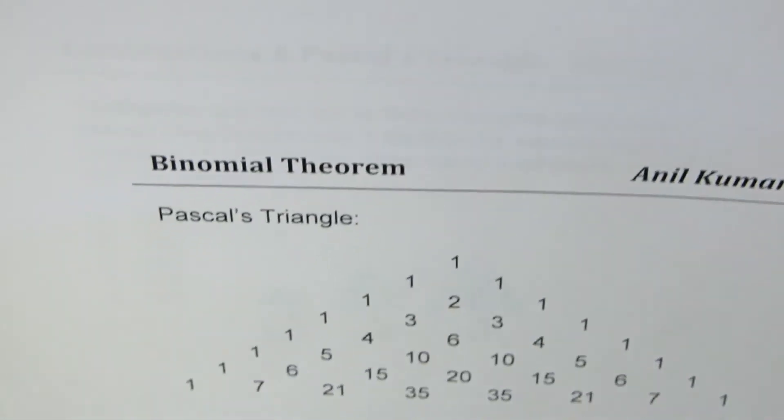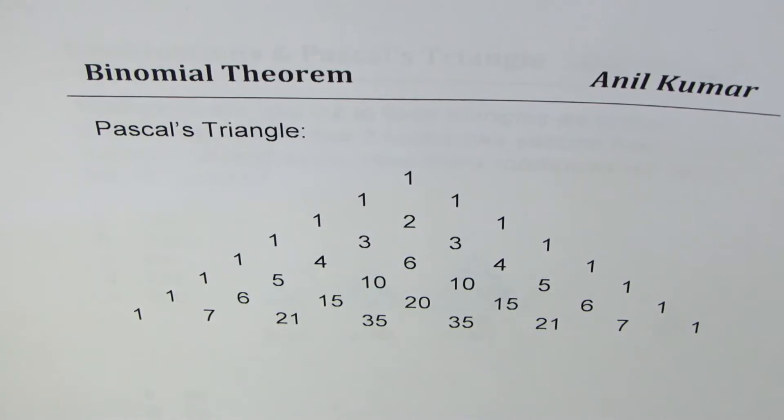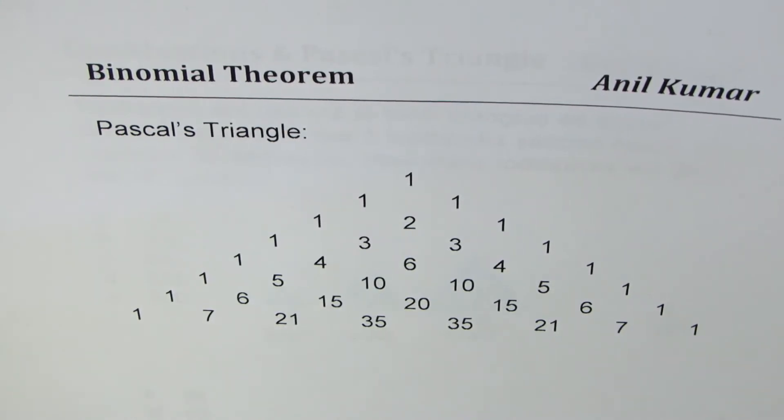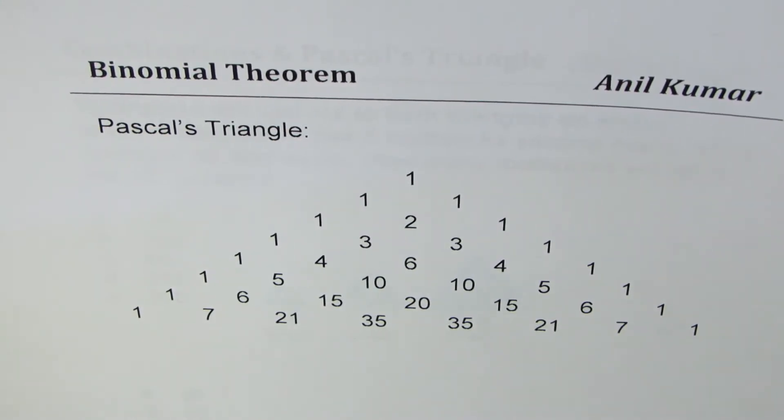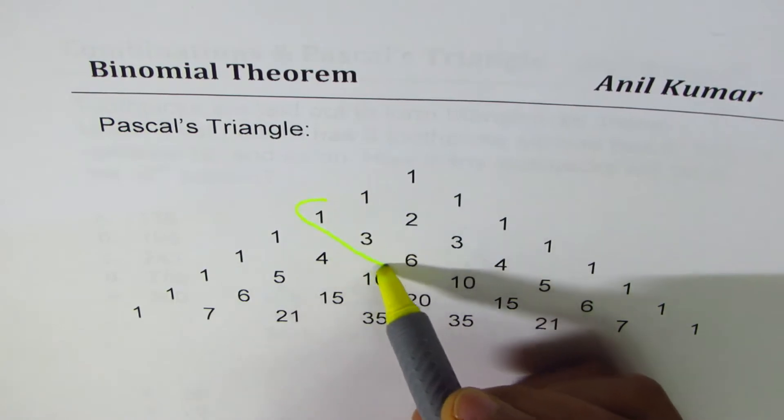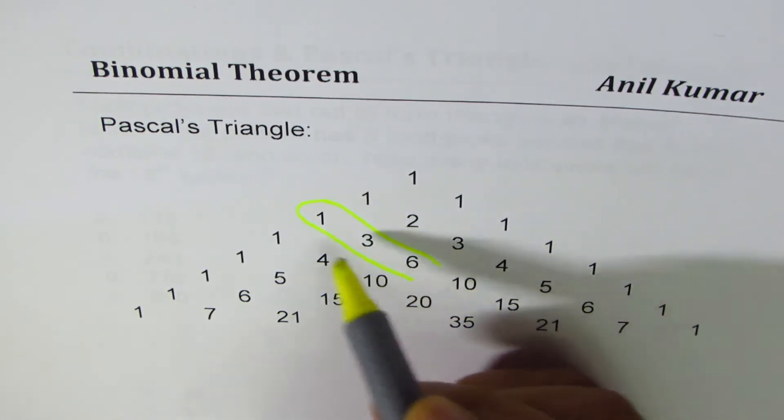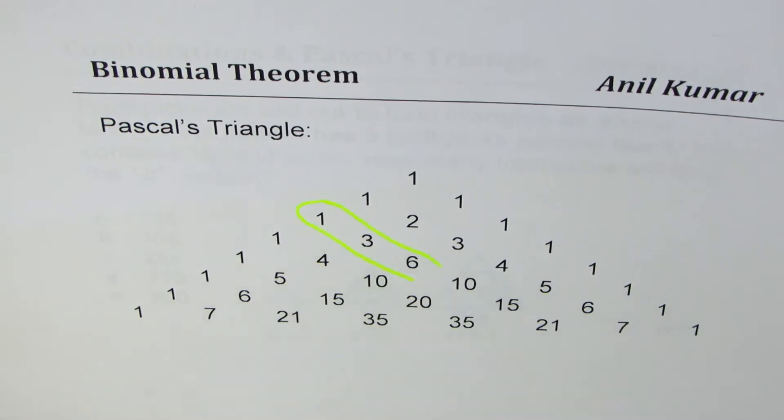So let's look at it. So that's the Pascal's triangle here and the numbers which we are looking for is 1, 3 and 6. So as you can see, 1, 3 and 6—you can see like this also, right? Okay, you can see from here also, but let's go like this. So 1, 3 and 6.